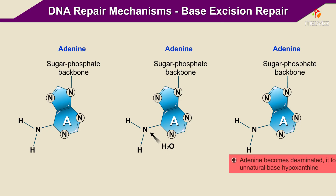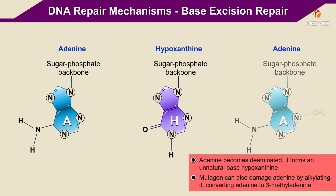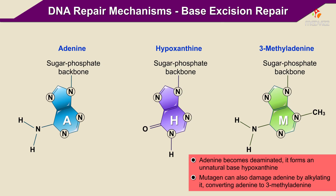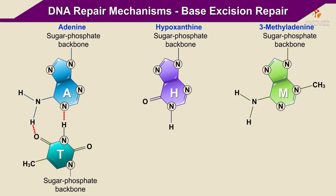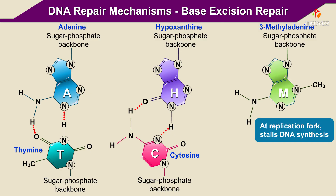For example, when adenine becomes deaminated, it forms an unnatural base called hypoxanthine. A mutagen can also damage adenine by alkylating it, converting adenine to 3-methyladenine. Normally, adenine forms a base pair with thymine, but hypoxanthine in its place is mutagenic because it forms a base pair with cytosine. 3-methyladenine is even more damaging — when it is encountered in the replication fork, it stalls DNA synthesis. Consequently, repairing these mutations is vital for survival.